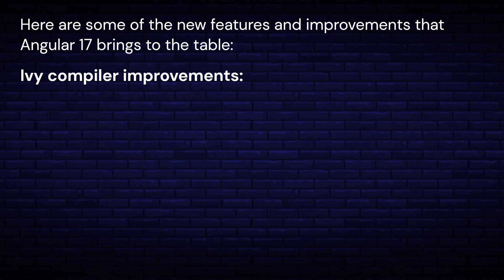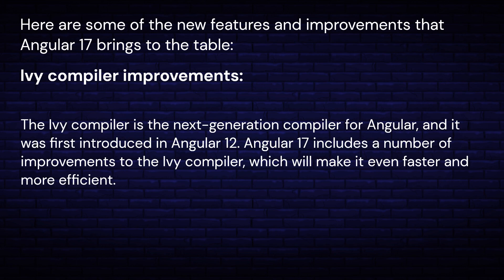Ivy compiler improvements. The Ivy compiler is the next-generation compiler for Angular, and it was first introduced in Angular 12. Angular 17 includes a number of improvements to the Ivy compiler, which will make it even faster and more efficient.